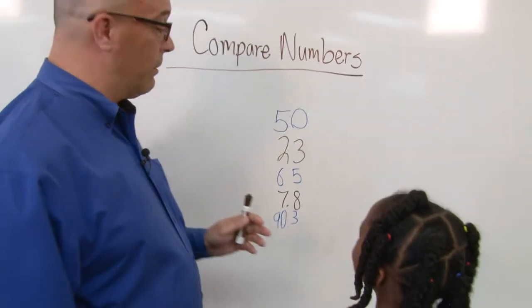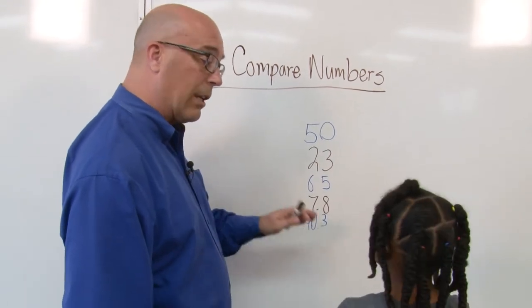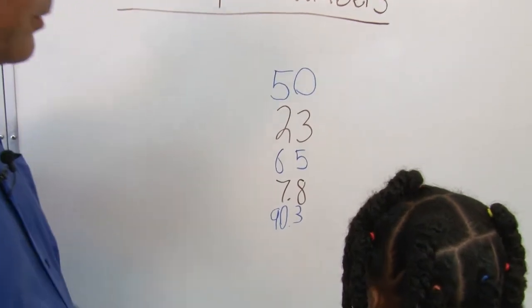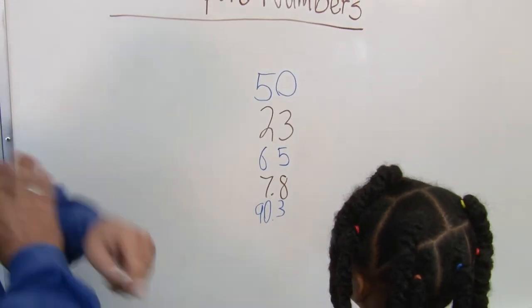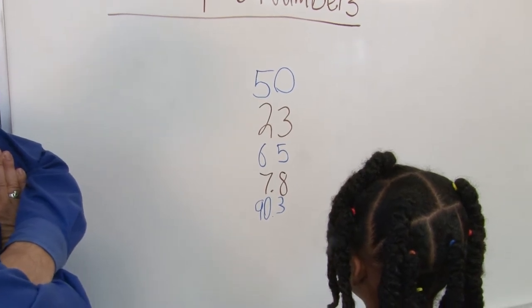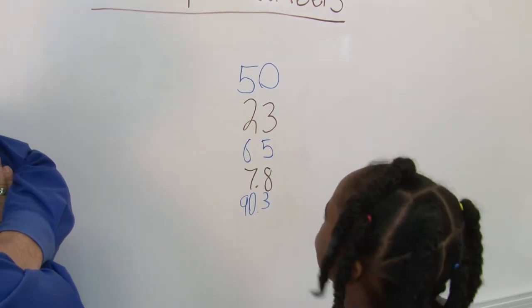So, now what I'd like you to do is take all of these numbers. We have five different numbers, and I'd like you to put them in order from smallest to largest. So, how do you think you're going to go about this? What's your first thought? To put 90 in front. You think 90 is going to be the largest one? Yes.